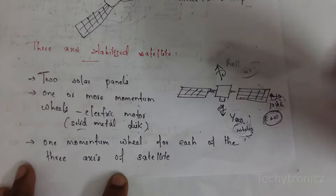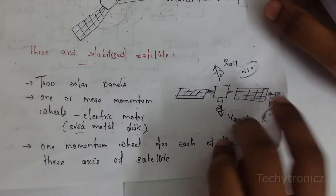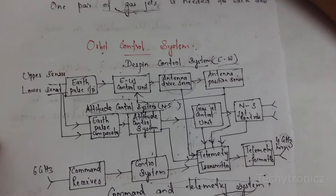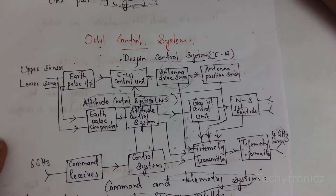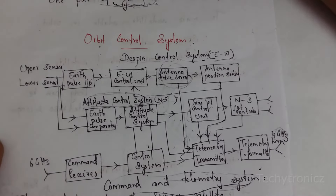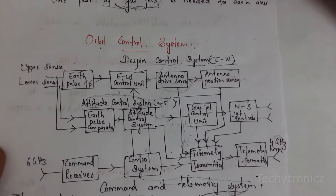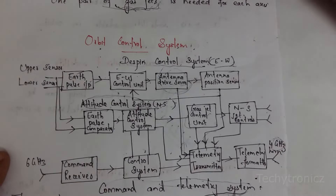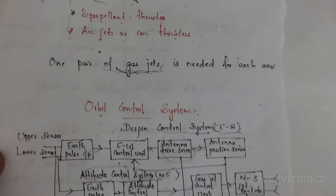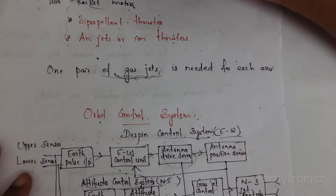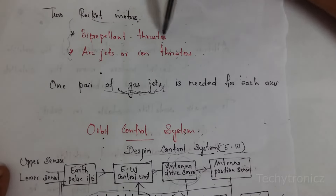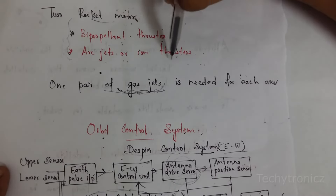The 3-axis system uses a momentum wheel driven by electric motors. There are two rocket motors used in the 3-axis stabilized satellite. The types of motors include bi-propellant thrusters, arc jets, and ion thrusters. These thrusters are used to correct the satellite back onto the correct orbital path.